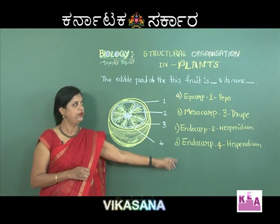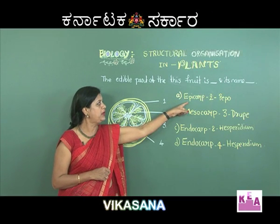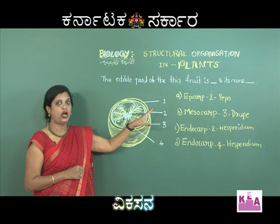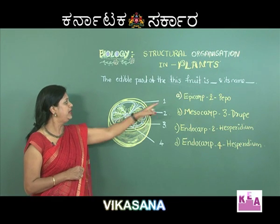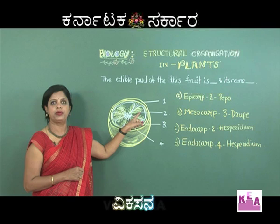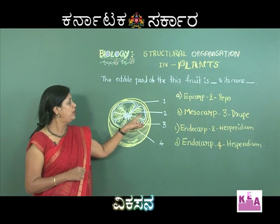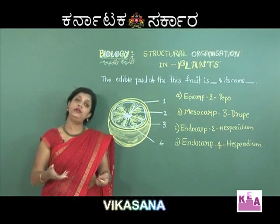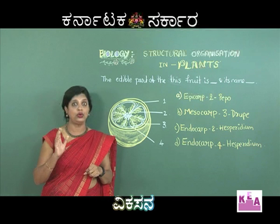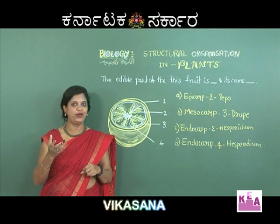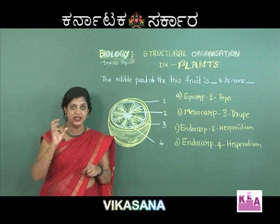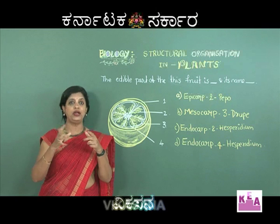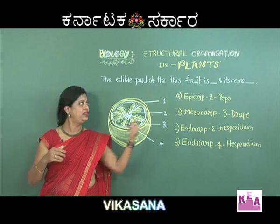The four options are given. Option A says epicarp is number two — but number two is not the epicarp; it is actually the mesocarp. So that is a wrong option. They also mention 'pepo' fruit, but pepo is found in cucumbers and cucurbits. It develops from a tricarpellary syncarpous but unilocular inferior ovary where ovules are arranged on parietal placentation — that doesn't match here at all.